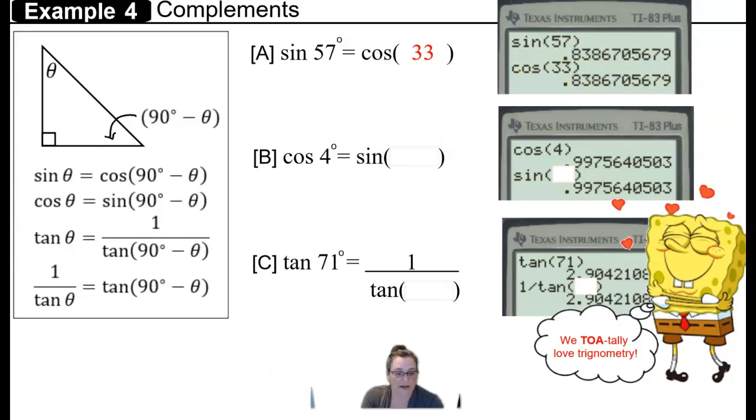To find the sine of 57 degrees, we did the cosine of 90 minus 57 degrees, and that's how we got the cosine of 33 degrees.